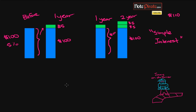When we earn interest on accumulated interest — interest on interest — that's known as compound interest, which we'll see in the next part. If you want to figure out how much interest you've earned under simple interest, you multiply the principal times the rate times the period of time. In this case: one hundred times five percent times two equals ten dollars of interest. Then you add back the hundred dollars principal.